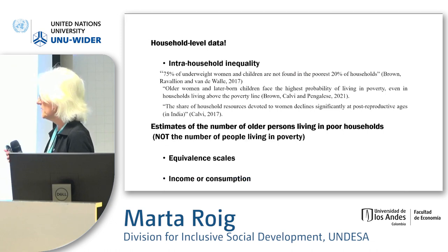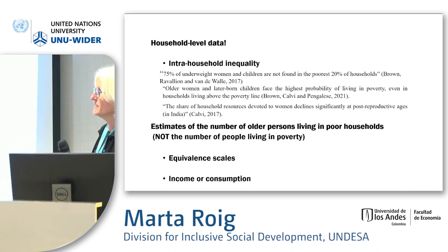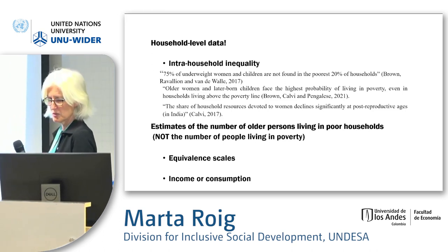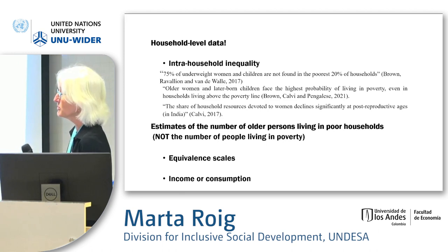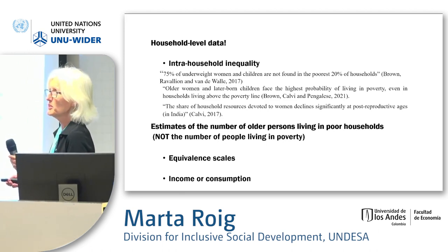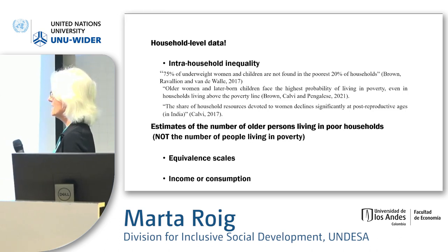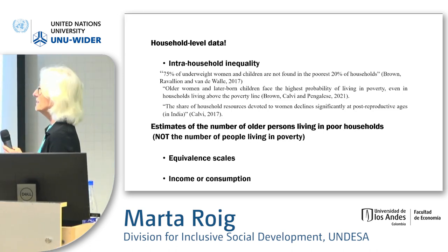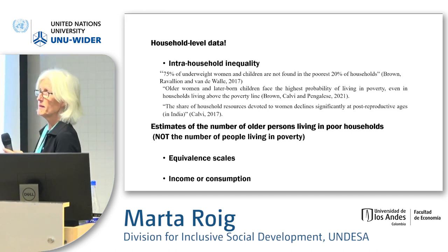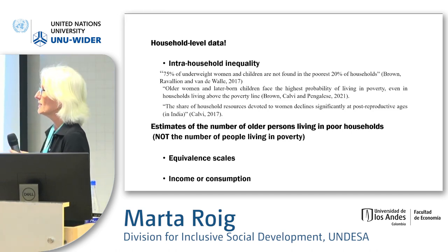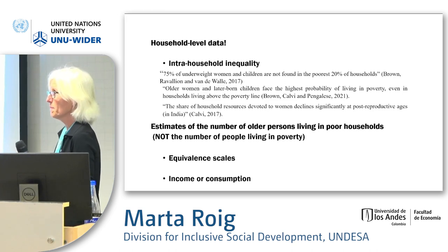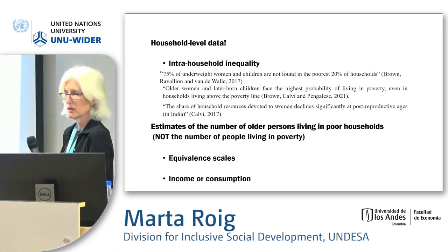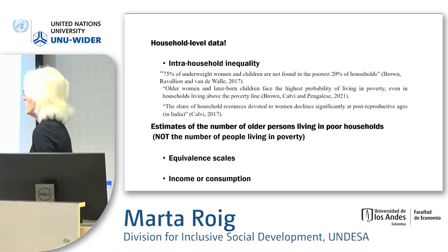Estimating poverty by age turns out to be more complex than expected. We have worked with household survey data, which does not provide information on the distribution of income or consumption within households. Without individual-level information, it is often assumed that resources are distributed equitably among household members. But significant research shows they are not — often women and older persons have lower living standards. So what we can say is what number of older people are in poor households, not whether they individually live in poverty.